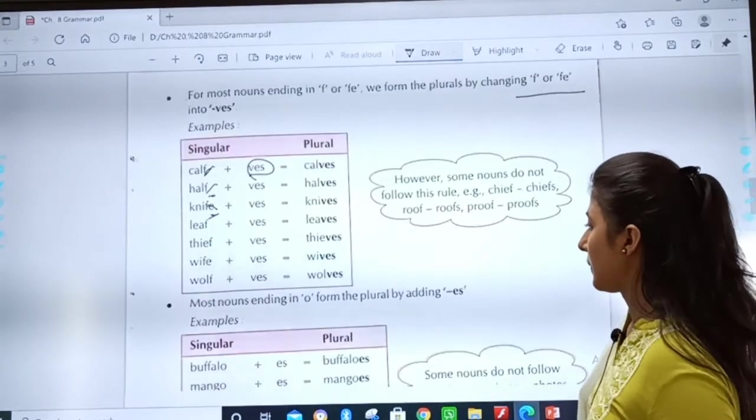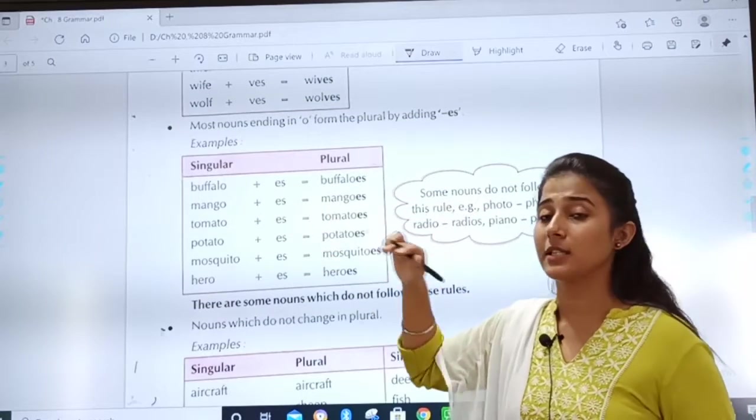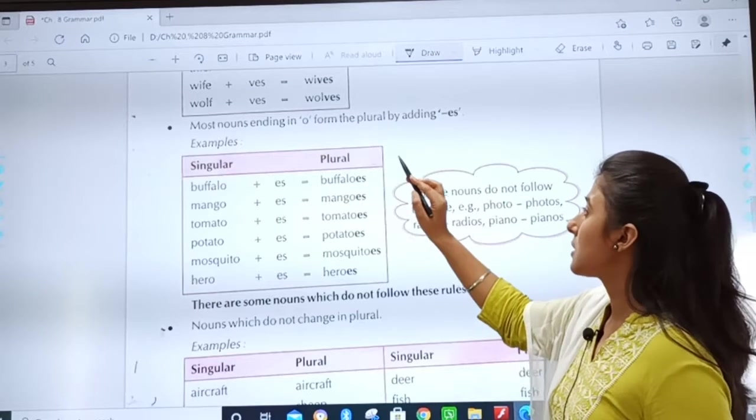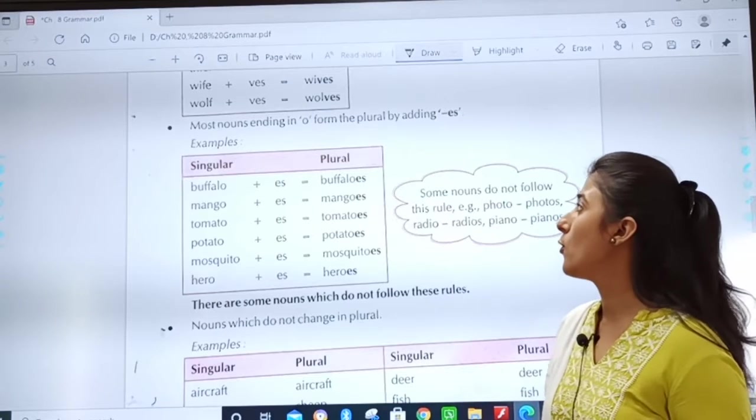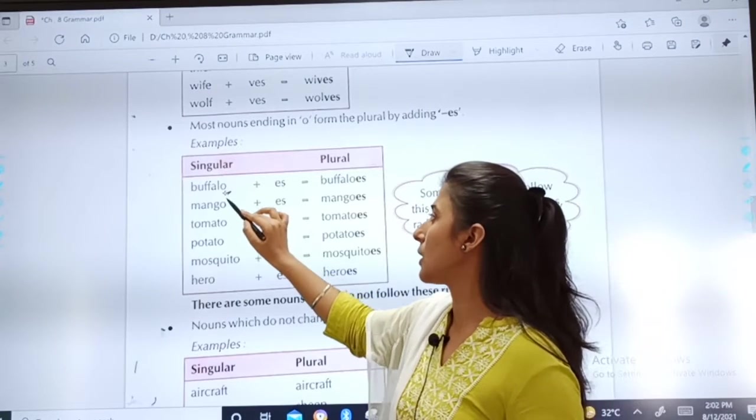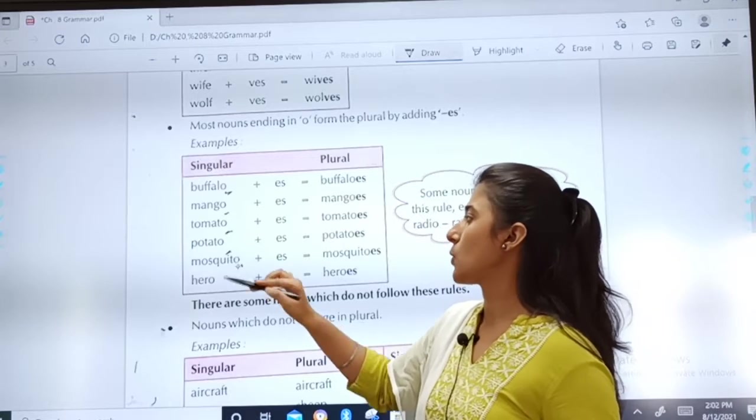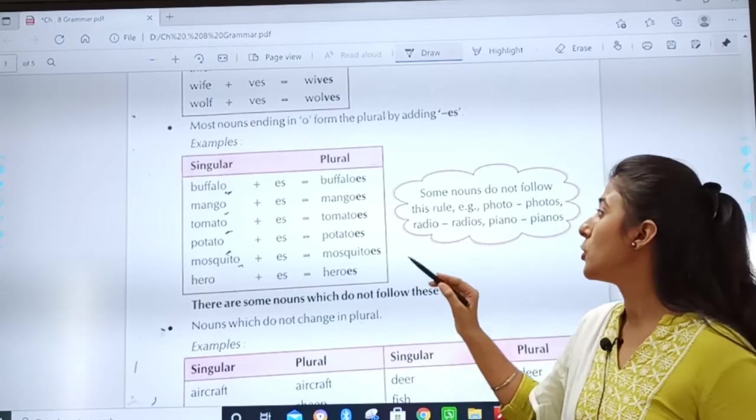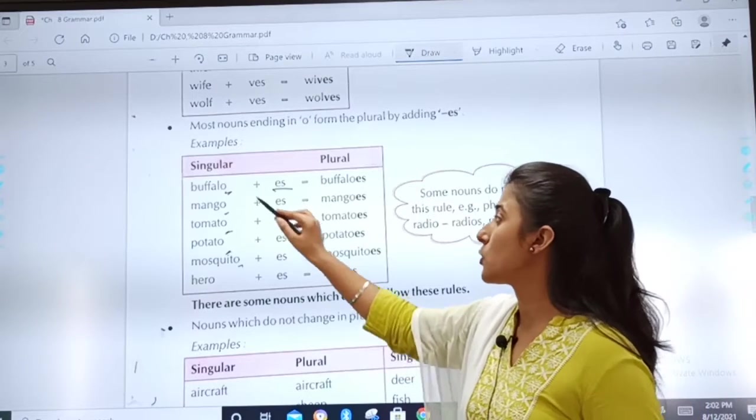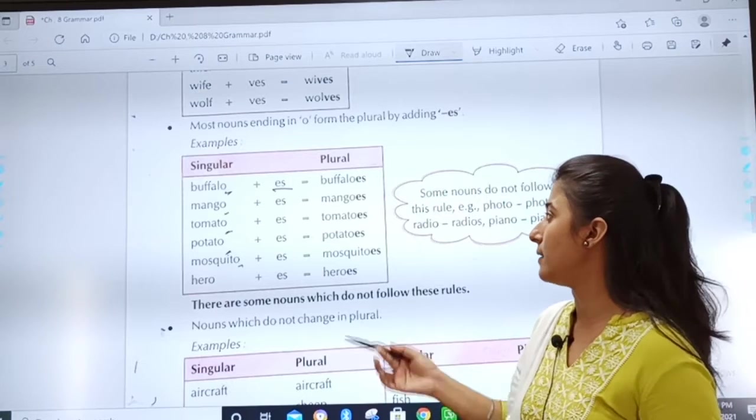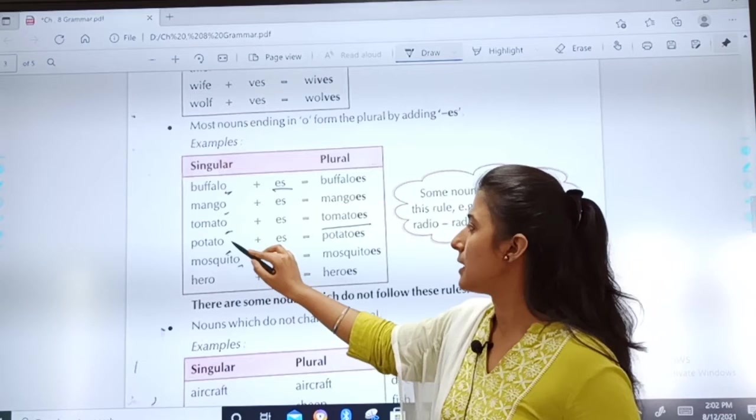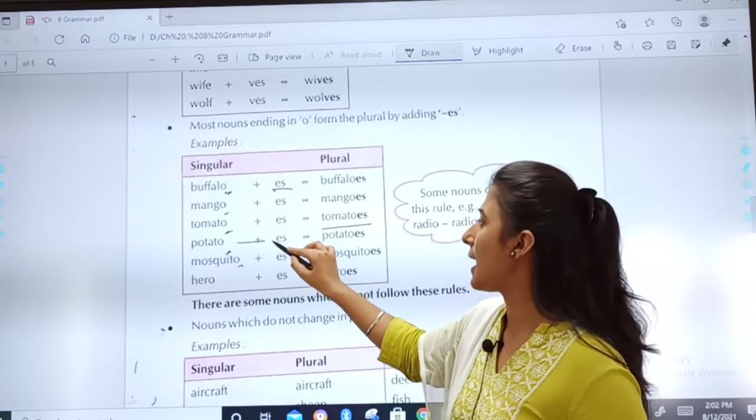Most nouns ending in O form the plural by adding ES. Again, pay attention to the last letter. When it is ending with O, you will add ES. Okay? Buffaloes. Here, you don't have to replace. You have to add mangoes, tomatoes. Okay? It is ending with O, so you will add ES.